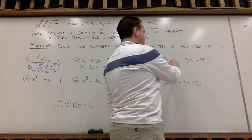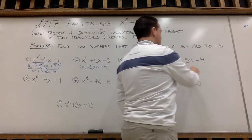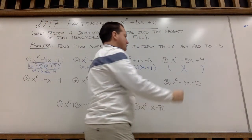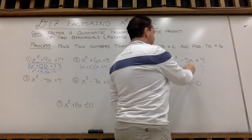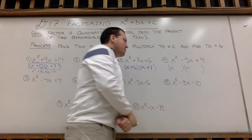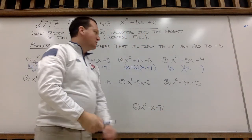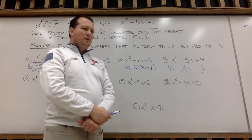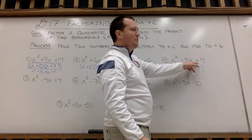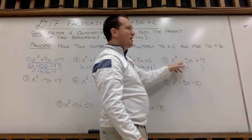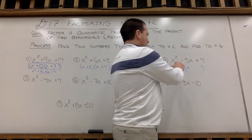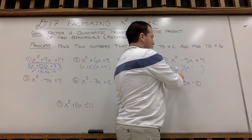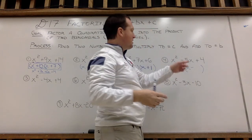All right, a little curveball for you here. New type of example. Notice here my b value is negative, negative 5. I need to find two numbers that multiply to make a positive 4, but then add to make negative 5. So we got to think. We need two numbers that multiply to make a positive, but add to make a negative. Well, think about it. A negative times a negative makes a positive, and then two negatives combined make another negative.